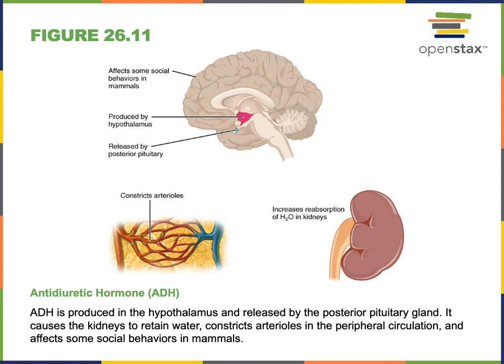The name antidiuretic hormone comes from its function in the kidneys, where it increases the reabsorption of water, causing the volume of the urine to decrease. A diuretic is a drug or chemical that causes urine volume to increase. For example, alcohol is a diuretic, and it works by inhibiting the secretion of antidiuretic hormone, disrupting the signaling that would normally decrease urine volume.